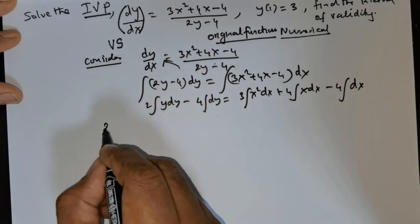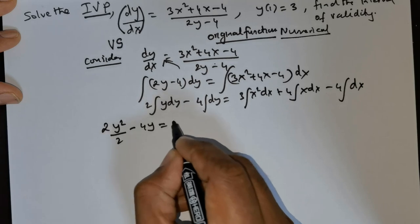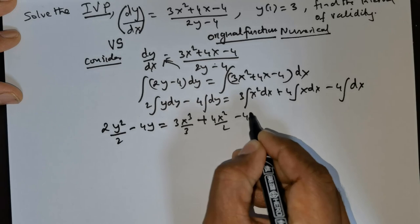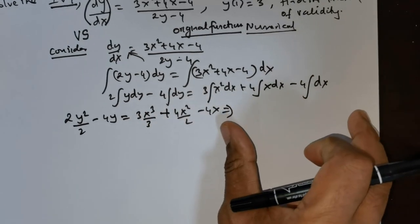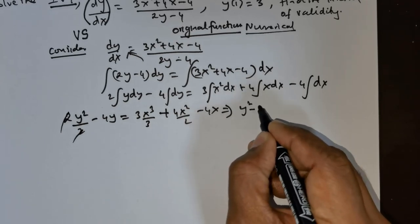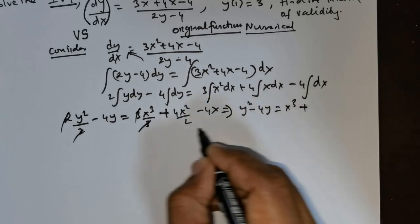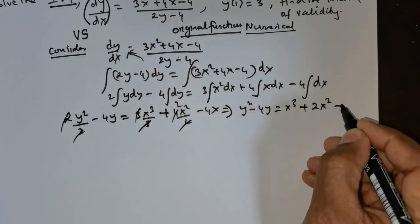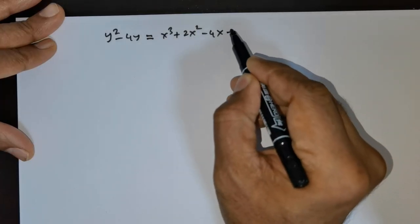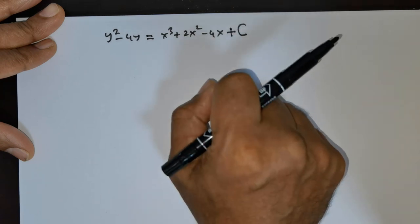Now if we integrate this, we get 2·(y²/2) - 4y = 3·(x³/3) + 4·(x²/2) - 4x. The 2s cancel, giving y² - 4y. The 3s cancel, giving x³. The 2 cancels with 4, giving 2x². So we have y² - 4y = x³ + 2x² - 4x. Since we are dealing with indefinite integrals, we place a constant c.